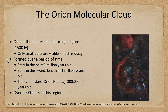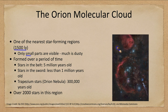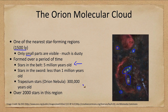Let's look at an example of one of these star-forming regions — the Orion Molecular Cloud. This is one of the nearest star-forming regions, only about 1500 light years away. Only a little bit of it is visible; much of it is very dusty and invisible to us. The four stars that outline the body of Orion are present, as well as the three stars in the belt. The stars in the belt are about five million years old, so they're still relatively young. The sword hanging down from the belt contains stars that are less than a million years old.